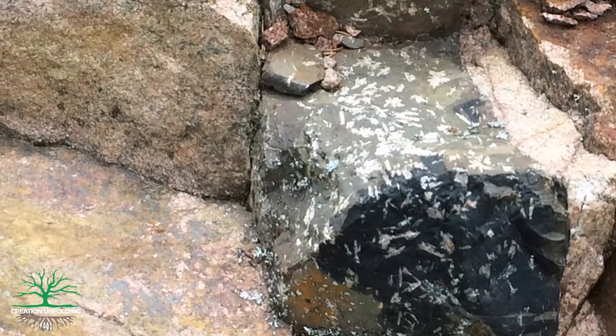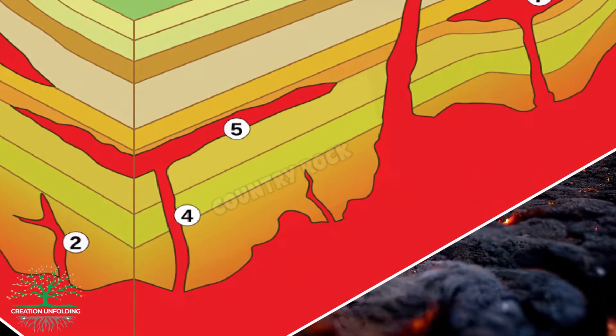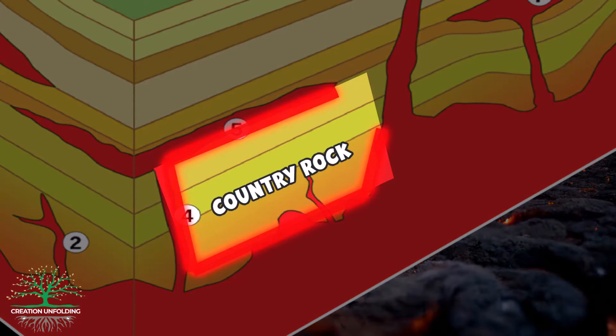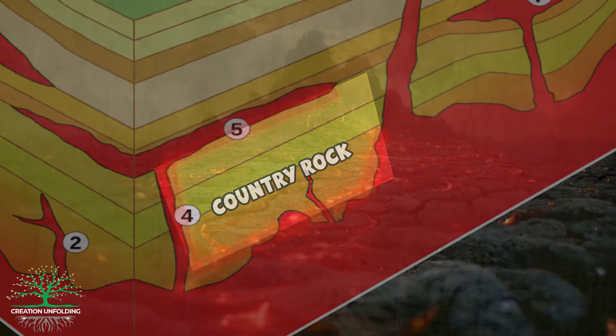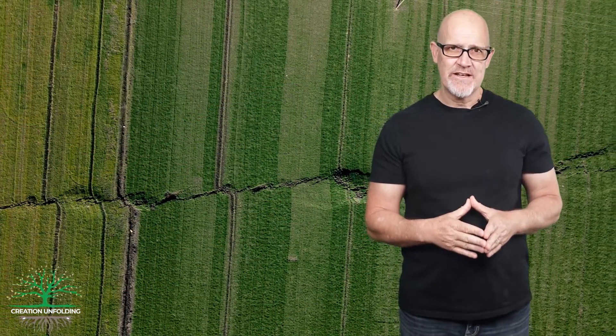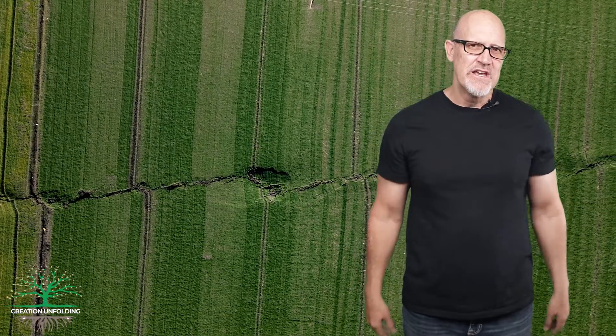The country rock, on the other hand, gets so hot at its margins that it sometimes bakes, and this process — called contact metamorphism — often produces different types of metamorphic rocks, such as marble and quartzite. Finally, there are fault contacts. Faults are simply breaks or fractures between two rock bodies where some parallel movement occurs between the two rock surfaces.